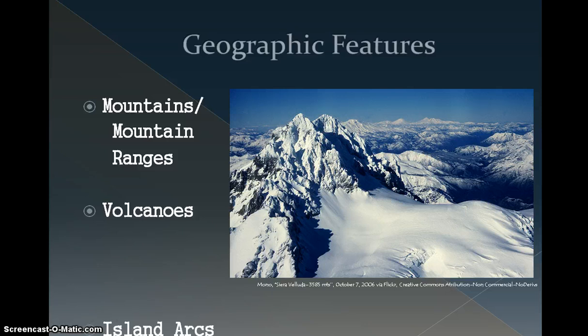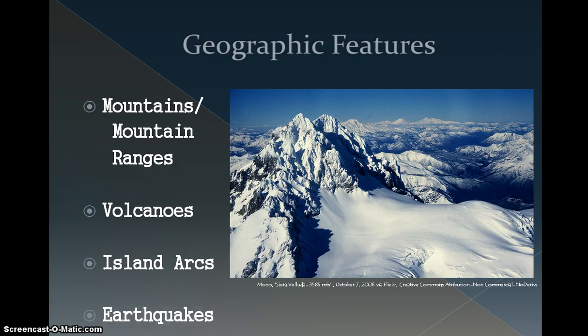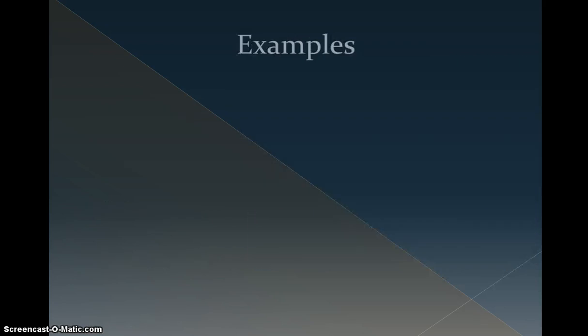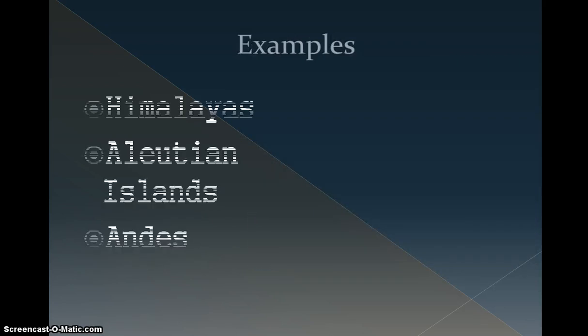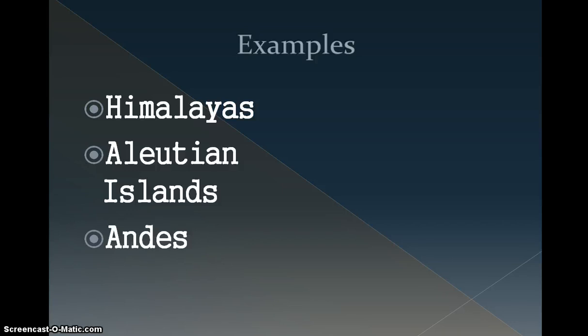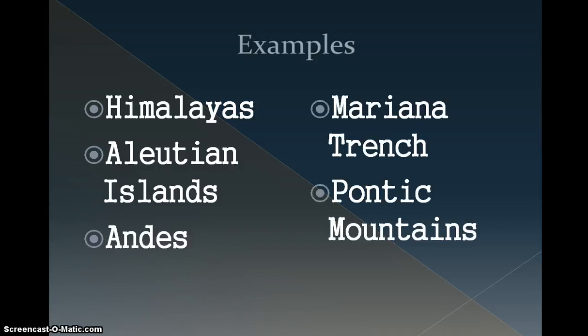The geographic features associated with convergent boundaries are mountains and mountain ranges, such as the Andes, where the Nazca plate is being pushed underneath the South American plate. Volcanoes and island arcs are also common features associated with subduction zones. Earthquakes are commonly found along convergent boundaries as well. Some examples of Earth's convergent boundaries are the Himalayas, the Aleutian Islands, the Andes, the Mariana Trench, and the Pontic Mountains.